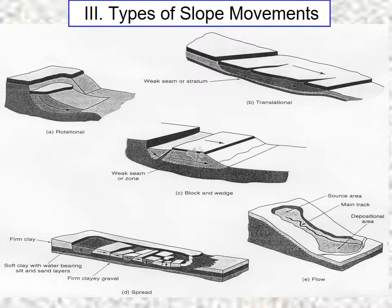Some types of slope movements are observed, but they are all natural occurrences. However, we must quantify them and determine the safety of the slope.